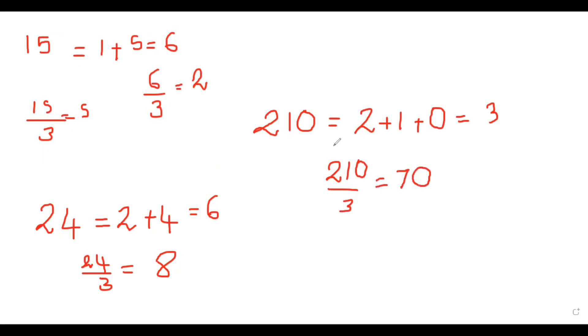As a conclusion, if the Digital Root is divisible by 3, then the whole number is also divisible by 3. You can keep trying these and find out whether a number is divisible by 9 or by 3 using the idea of Digital Root. Thank you.